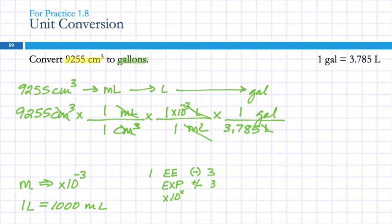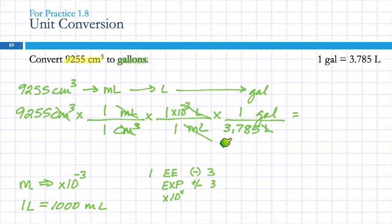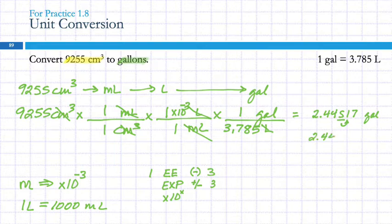After fixing the sign error, the answer has four sig figs — the starting number had four. The result is 2.445 gallons. Looking at the next digit, you don't need to round up, so the answer is 2.445 gallons.